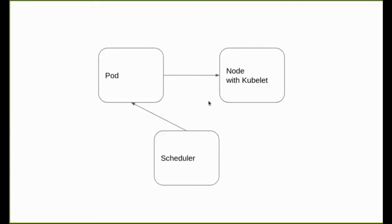In this video we are going to see about the scheduler, and we are also going to add an extra scheduler to an existing cluster. A scheduler is responsible for scheduling pods on one of the available nodes. There could be certain criteria — for example, a pod can specify resource requirements, and the scheduler checks available nodes and their capacity to ensure the pod gets scheduled. Until then, the pod is going to be in the pending state.